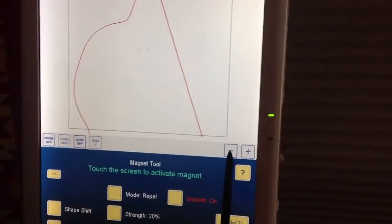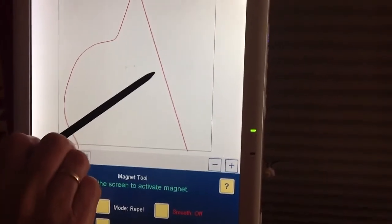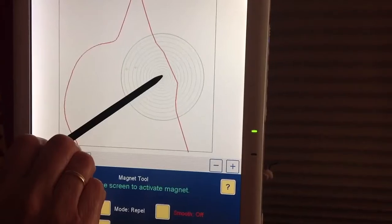Now when I turn smooth off and do the same with this side, see how it's angular?